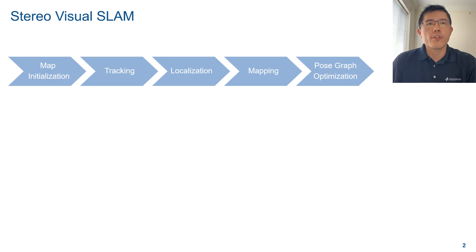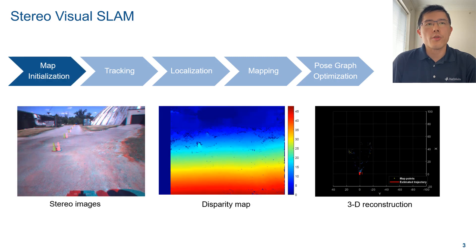This is a typical feature-based Stereo Visual SLAM workflow. You can use the Computer Vision Toolbox to build the pipeline. Let's go over the steps one by one. You start with map initialization. The initial 3D map can be created by computing a disparity map between the two stereo images and then computing the 3D world points.